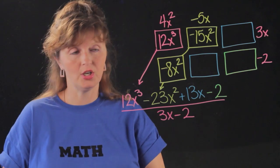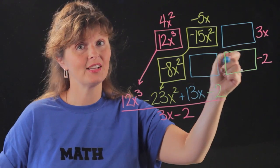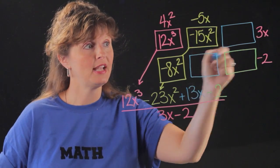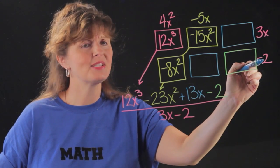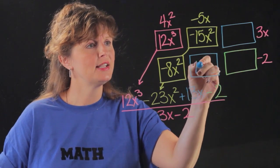And then I look to the next column. Again it's just like a multiplication chart. Down and across. -5x times -2 is 10x.